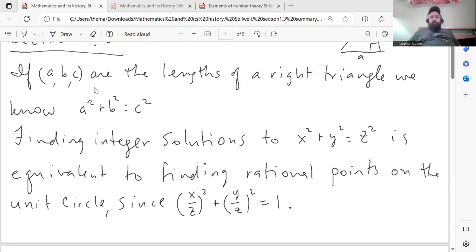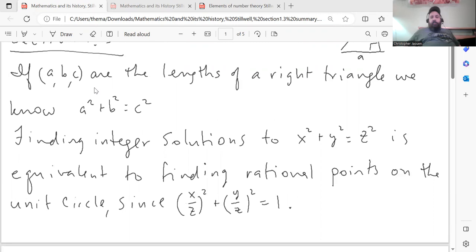If we are interested in finding integer solutions to an equation like that, x squared plus y squared equals z squared, it's equivalent to finding rational points on the unit circle. Since if z is not zero, we can divide everything by z squared, which gives us the equivalent equation x over z squared plus y over z squared equals 1.